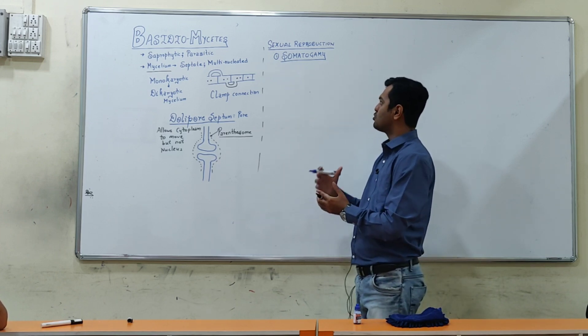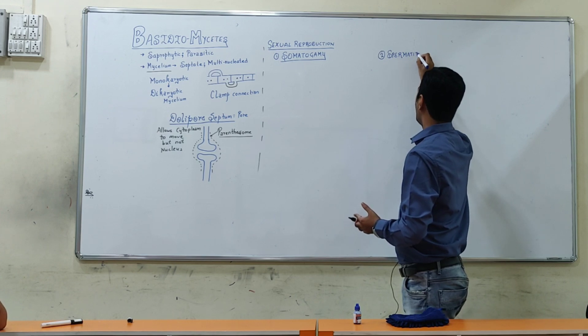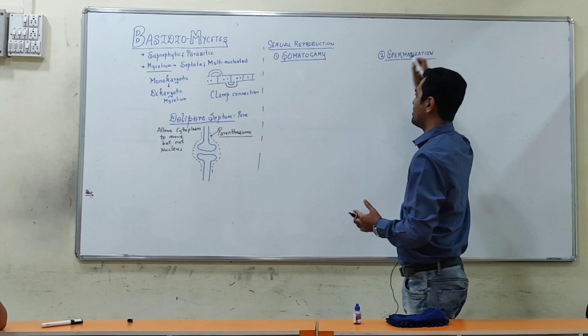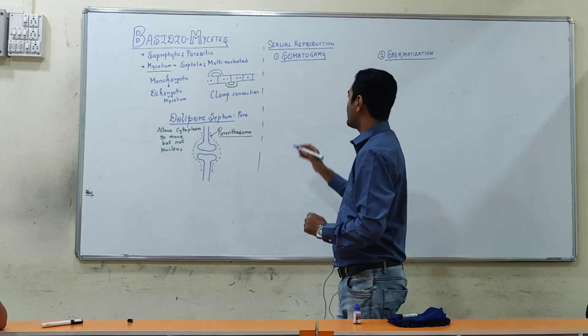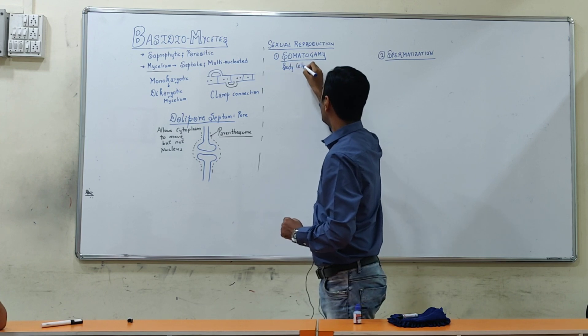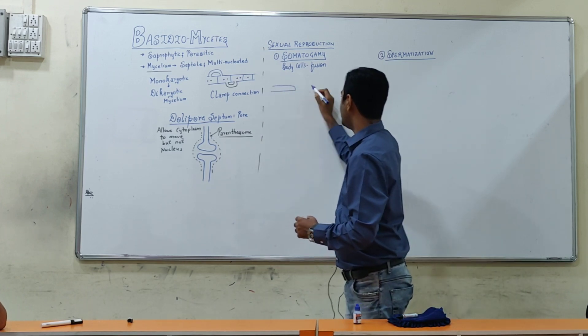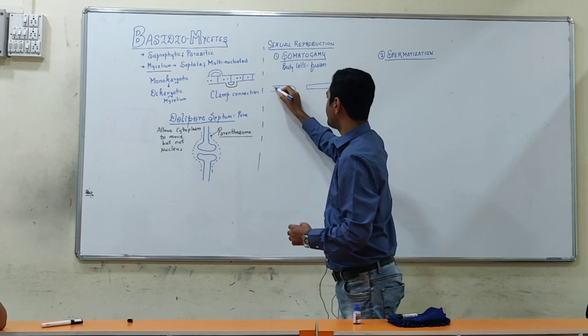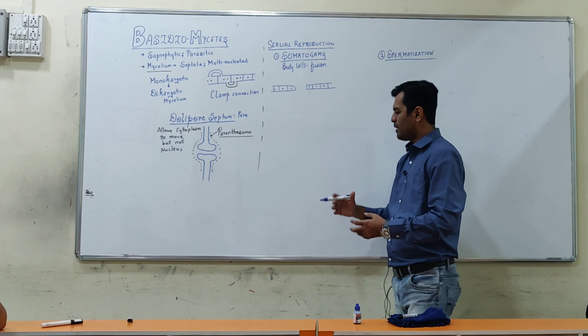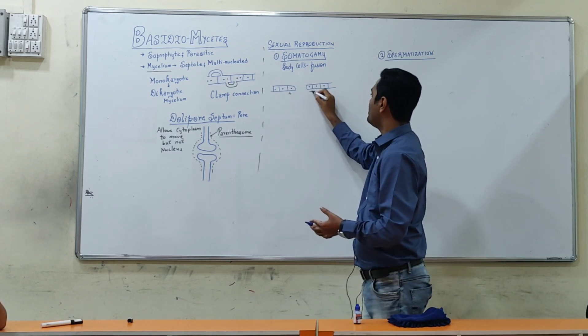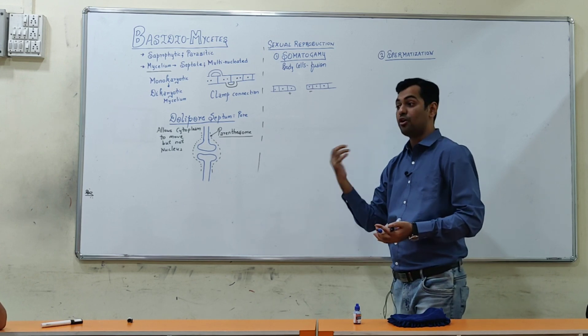Here stages come but in that some story is different and the second method that is observed is known as spermatization where motile male gametes form as spermatia. So spermatization mainly that is the process of somatogamy. Somatogamy in this way is observed. Where body cells will undergo fusion and they will undergo sexual reproduction. This way there are two different mycelium. Two different mycelium are present. If two different mycelium are there, should I call it homothallic or heterothallic?